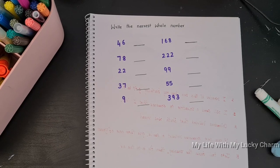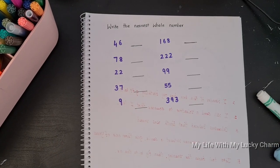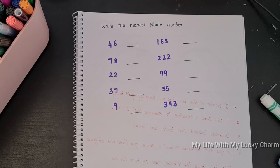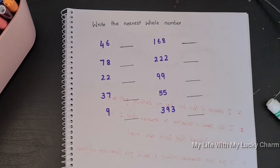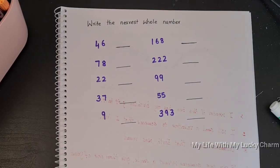So next is a simple math activity to work on the nearest whole number. This activity really helps when the kid is going to work with mental math. Are you ready? Yes. So your first number is 46.